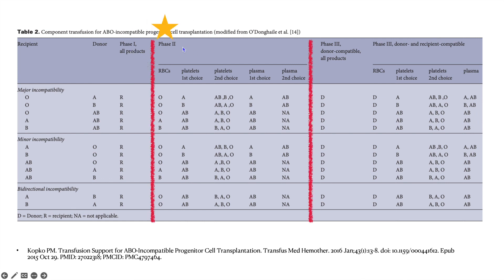Phase one is relatively straightforward: whether it's major, minor, or bidirectional incompatibility, you just give the recipient blood type. For phase three — when engraftment is successful, which you can determine by chimerism studies or when the type and screen looks like your donor's — you give the donor type, whether it be red blood cells, platelets, or plasma, regardless of whether they're major incompatible, minor incompatible, or bidirectional.